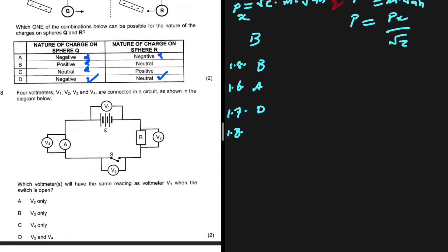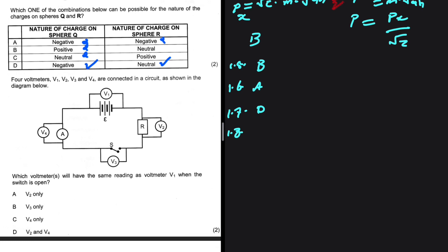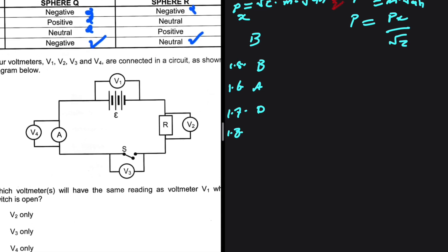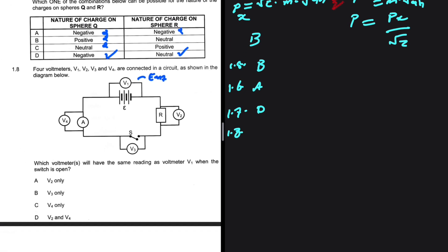1.8: Four voltmeters, V1, V2, V3, and V4 are connected in a circuit as shown in the diagram below. Which voltmeter will have the same reading as voltmeter V1 when the switch is open? Let's take a look at V1. V1 is reading the EMF when the switch is open. It's connected across the ends of the battery. Because there's no current flowing here when that switch is open. The current is going to try going through the voltmeter, but it can't because it has very high resistance. So V1 is reading the EMF. Can V2 read the EMF? No, it cannot. It is not connected across the ends of the battery. V3, the same is true with V4. But V3 is reading the EMF.